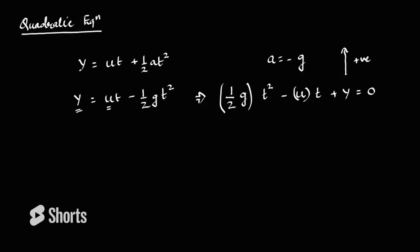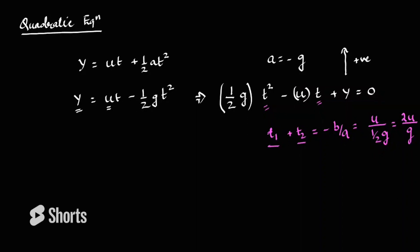Now, clearly this is a quadratic equation in t, which means it will have two roots t₁ and t₂ such that the sum of roots t₁ + t₂ = −b/a. In this case, −b/a becomes u/(½g), and therefore by rearranging, it equals 2u/g. You have seen this before — 2u/g is the total time of flight in vertical motion. So the two roots t₁ and t₂ sum to the total time of flight, meaning t₁ + t₂ = 2u/g.